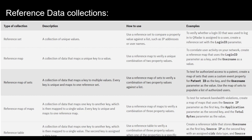A reference table is a collection that maps one key to another key which is then mapped to a single value, but the second key is assigned a specific data type. For example, creating a reference table that stores username as the first key, source IP as the second key with an assigned data type of CIDR format, and source port as the value. In that case, we would use reference tables.